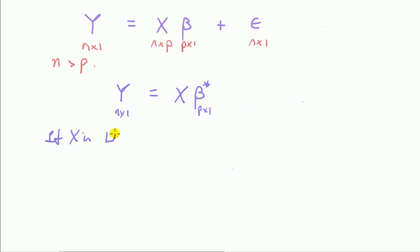If X is square and invertible, we know that then beta star, the solution, will be easy. You take the inverse of both sides, so it's X inverse Y. But to say that X is square is the same as saying you've got the same number of parameters as observations.